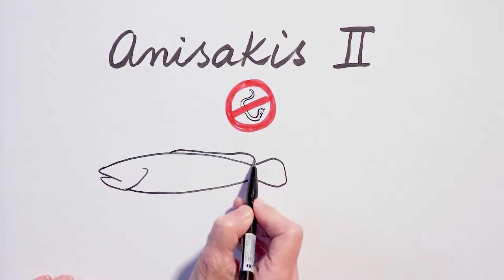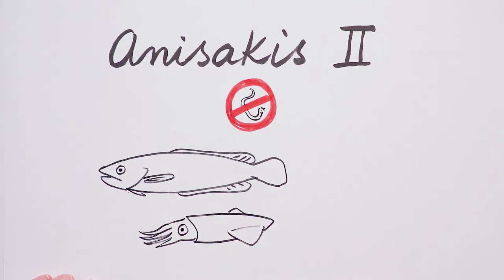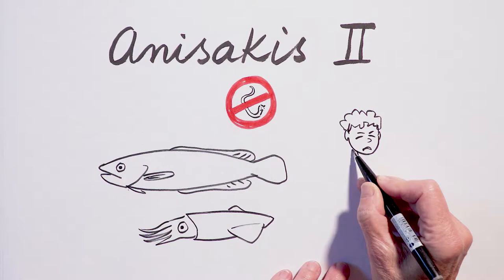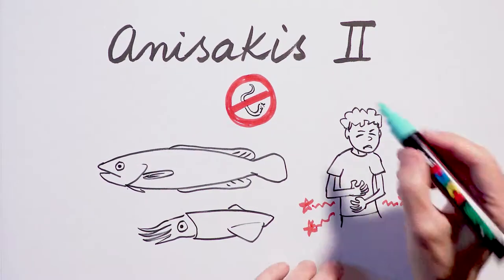Anisakis is a parasite that lives in fish and cephalopods, like squid or octopus. If we eat raw or undercooked fish, there's a chance that we'll also swallow a live Anisakis larva, and that can make us ill.